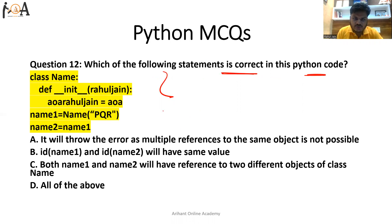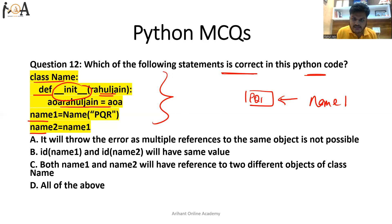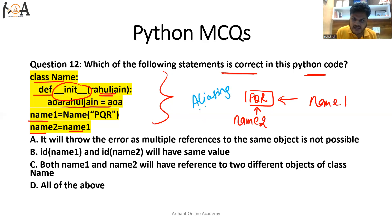Question number 12: which of the following statements is correct in this Python code? Let's scan the code. We have a class, a function, and the function name is given with an initial parameter. Inside the function, we have two identifiers — name1 and name2. To name1, the object 'pqr' is assigned, and to name2 we assign the value of name1, meaning it also references the same object.